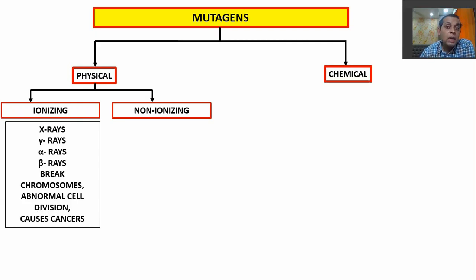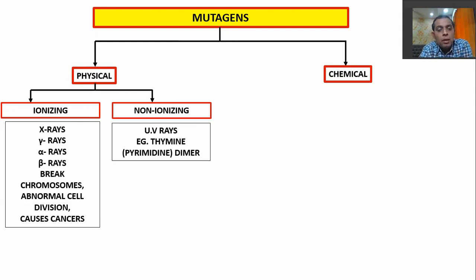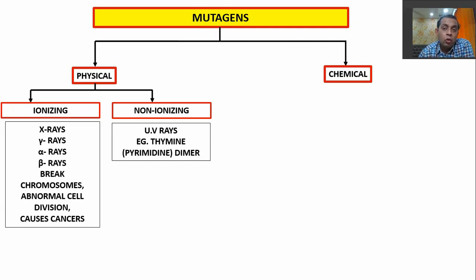Non-ionizing radiations have longer wavelengths and lower energy. These can also cause mutations. For example, UV radiation can cause thymine dimer formation, meaning two thymine bases become joined together, which can cause a significant mutation.